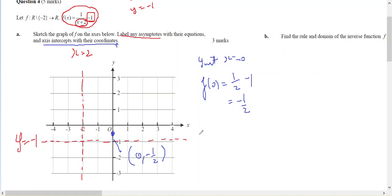To find the x-intercept, set y equal to 0. So 0 equals 1 over (x+2) minus 1. Move the 1: 1 equals 1 over (x+2). Multiply: x+2 equals 1, so x equals negative 1. There we have the second point, which is (-1, 0).